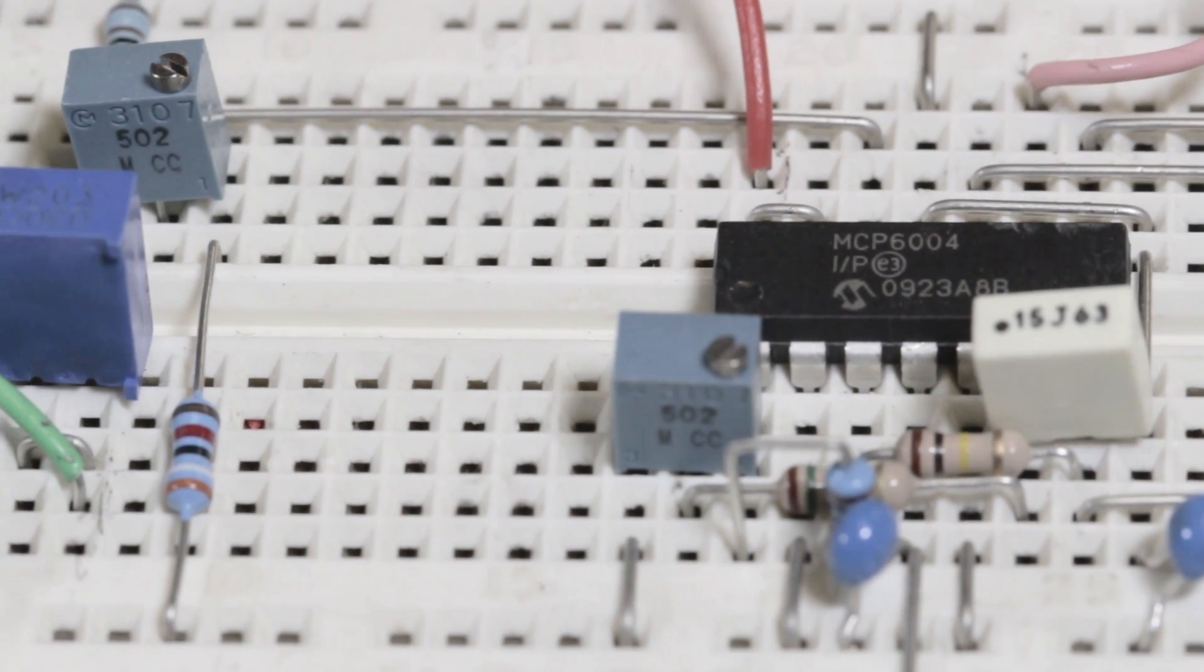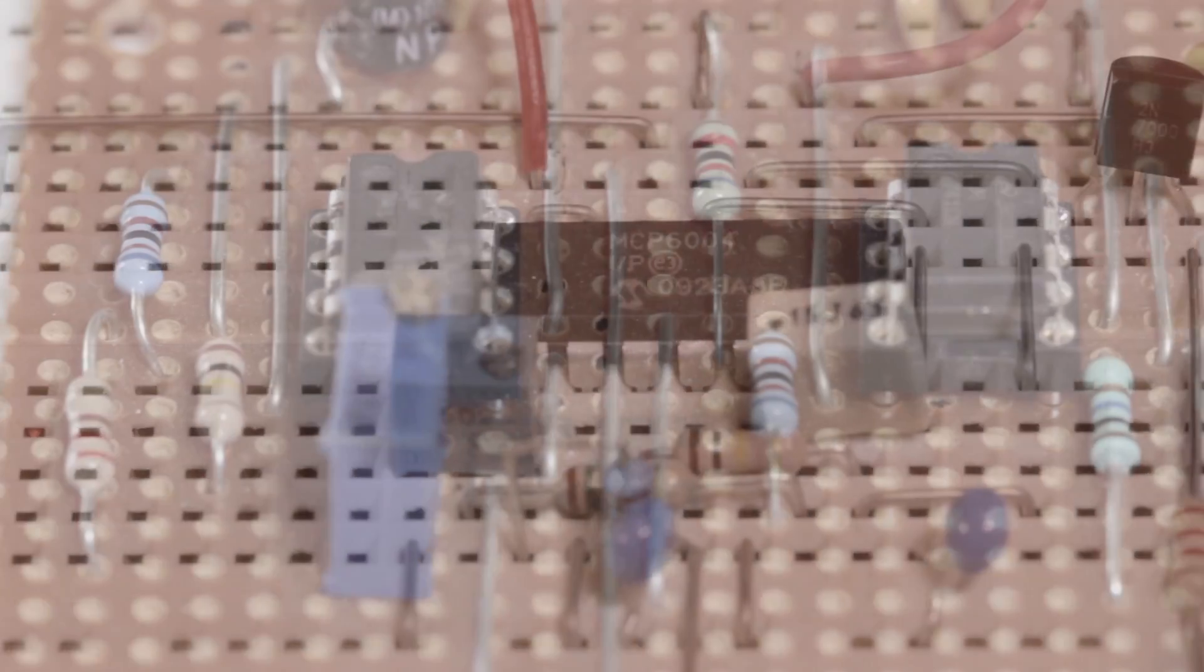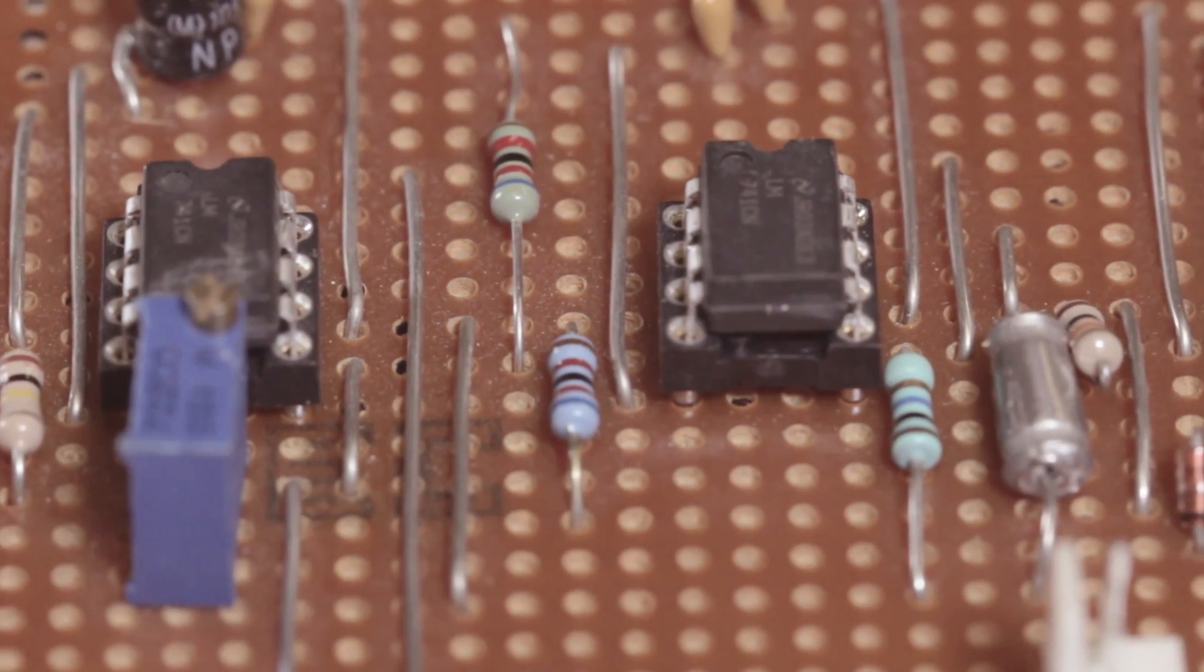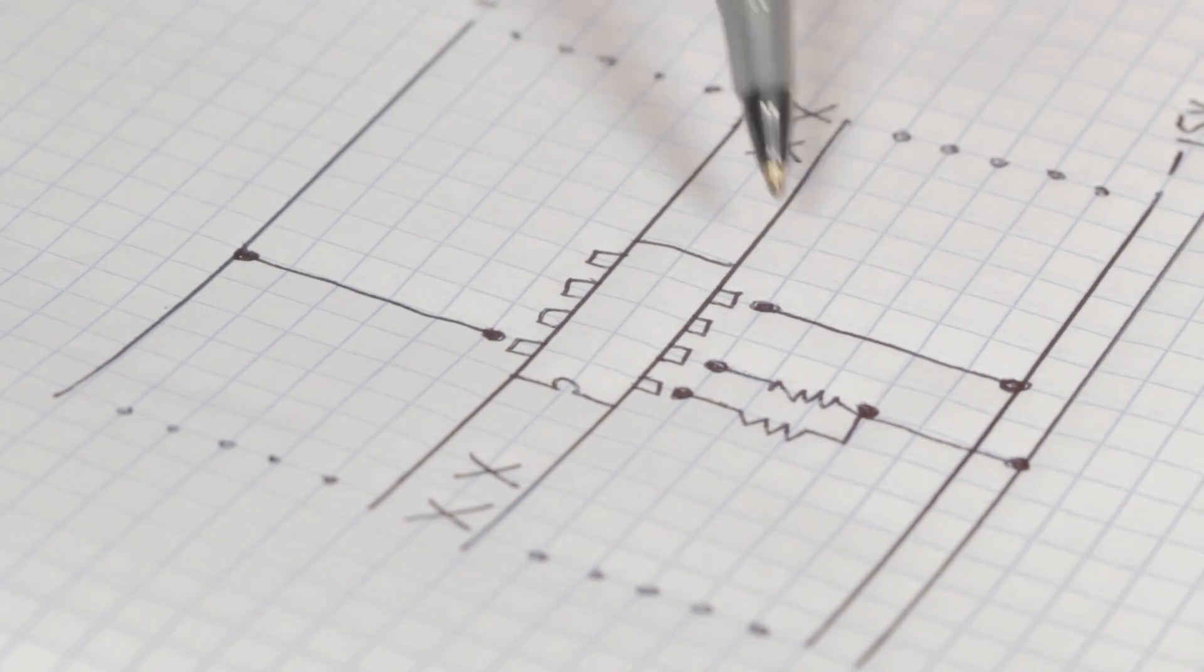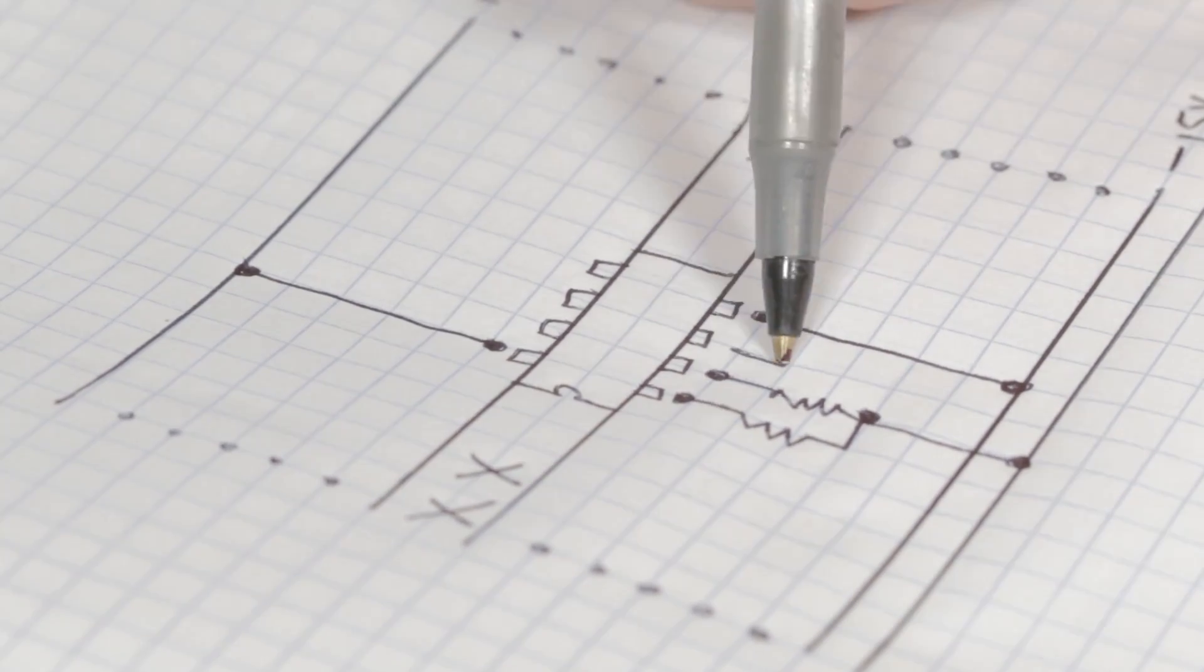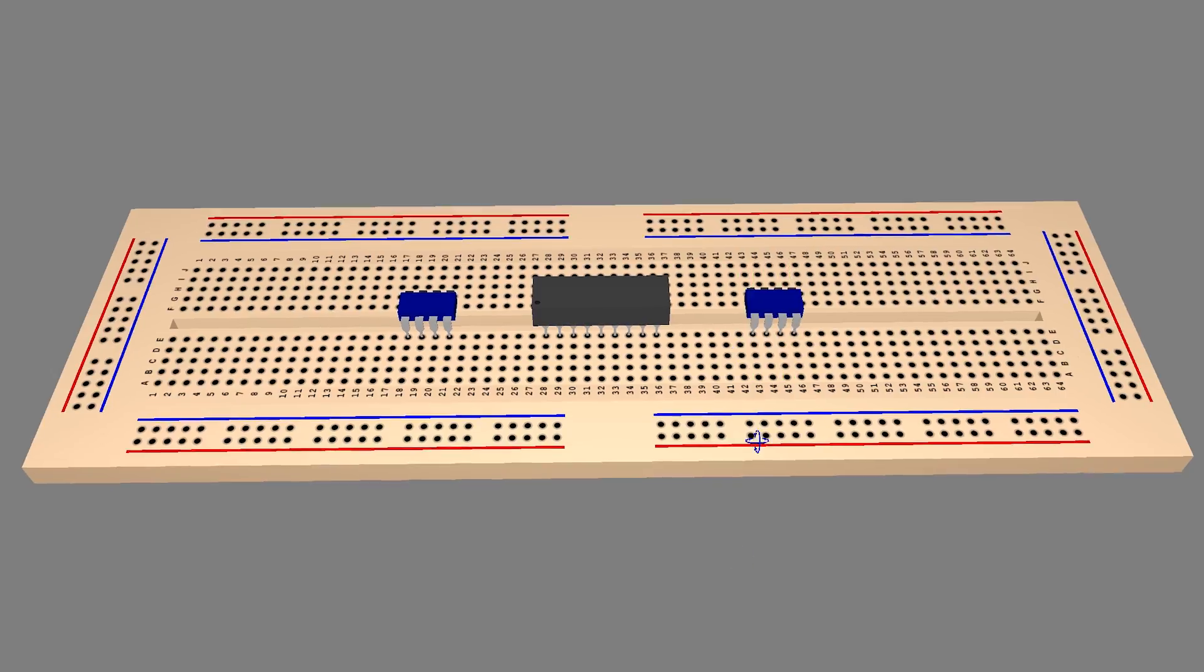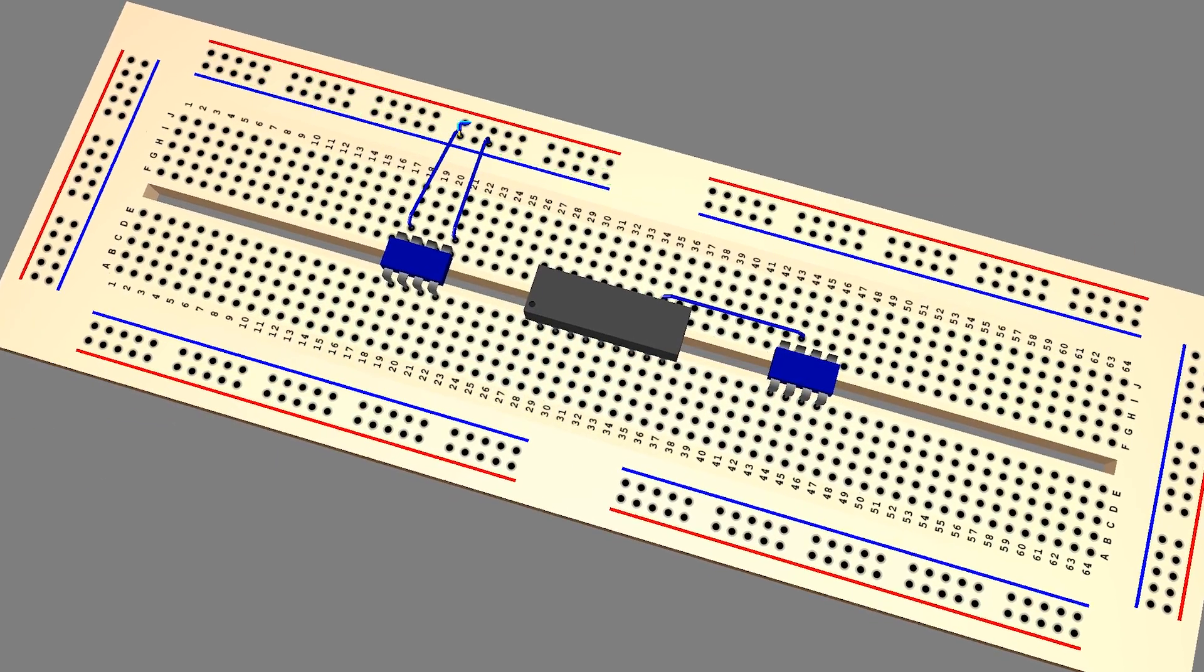Prior to PCB fabrication, a circuit design can be prototyped using different types of construction boards. This is often done by planning the design on paper, but some design software has the option to output to a prototyping layout.